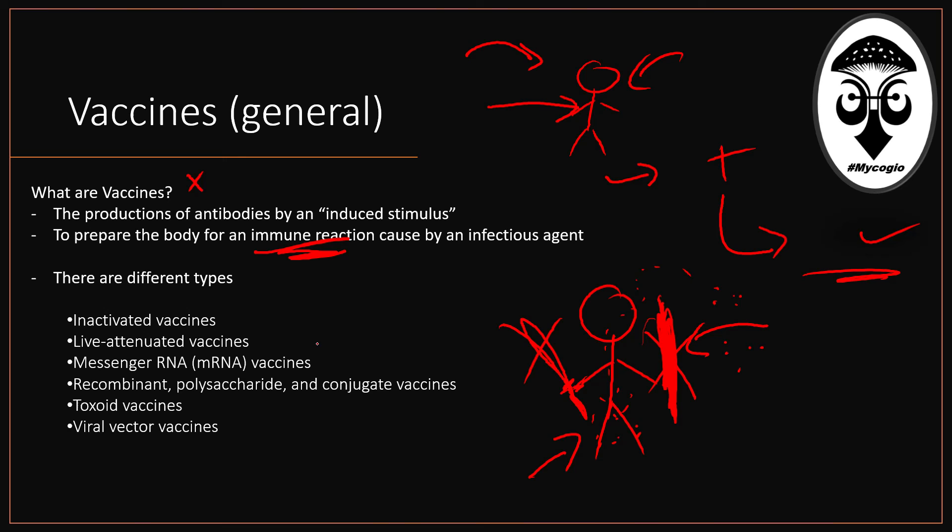Later on I'll touch on why some people get very ill while others have mild symptoms — there are different factors to consider. There are different types of vaccines. There are inactivated vaccines, which were very popular in the past, and live attenuated vaccines, which are old-school but still very good vaccines.